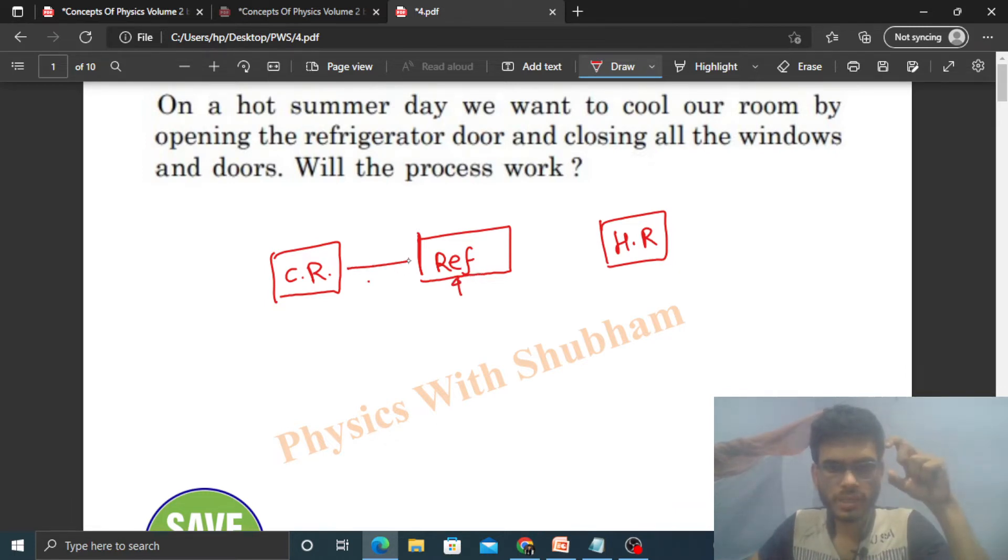It abstracts some heat from the cold reservoir - let's say QC amount of heat is abstracted from the cold reservoir. Some work is performed, W, and QH amount of heat is supplied to the hot reservoir. Then you can see QH equals QC plus W.